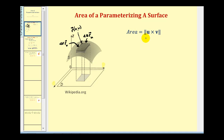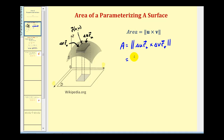To determine the area of this tangent plane, we can determine the magnitude of the cross product of those two vectors. So our area would be equal to the magnitude of delta u times the partial derivative of r with respect to u, crossed with delta v times the partial derivative of r with respect to v. We can rewrite this as the magnitude of the cross product of the partial derivatives times delta u delta v. This represents the area of one small tangent plane.